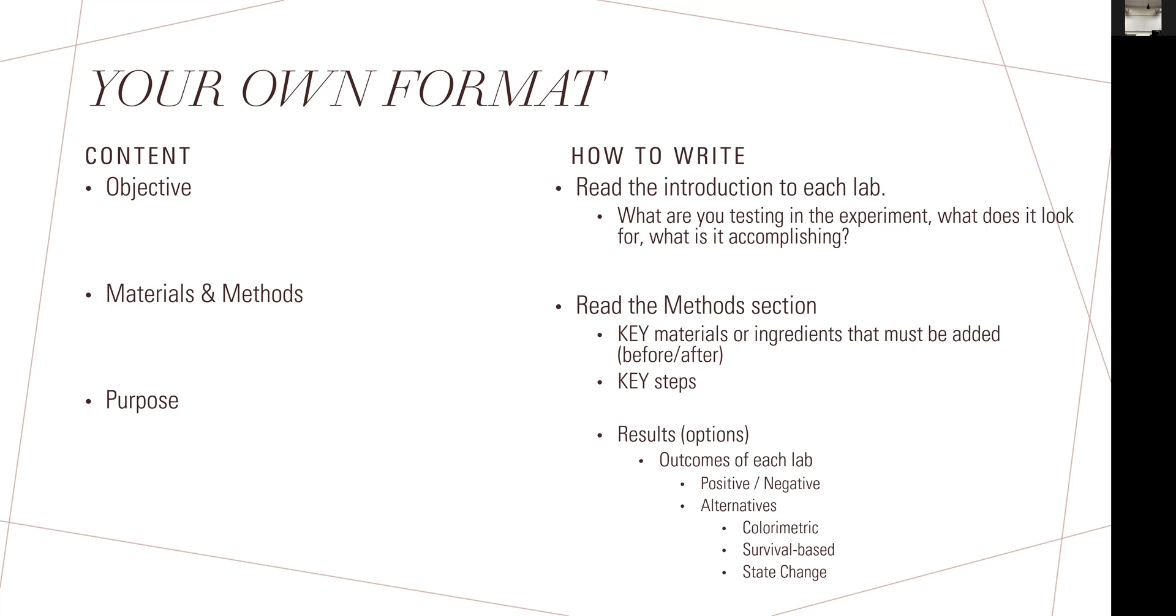Right after the methods section, on the same page or sometimes the next page, you'll be told what type of results to expect. That's what goes into the original purpose section. What are the options, the possible outcomes of that particular test? Most of the time they're fairly dichotomous, meaning you'll get yeses or nos, positives and negatives. But sometimes you have alternatives like color changes, survival basis, or state changes from liquid to solid.